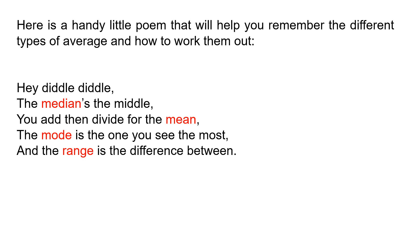Now this handy little poem is worth learning. It'll help you remember the different types of average and how to work them out. Hey diddle diddle, the median is the middle. You add then divide for the mean. The mode is the one you see the most and the range is the difference between. Really useful little poem, quite easy to remember. It not only tells you which is which, but it kind of also tells you how to do them.